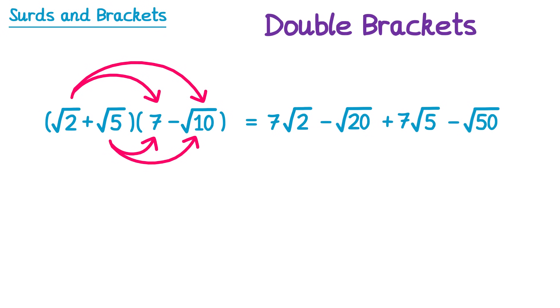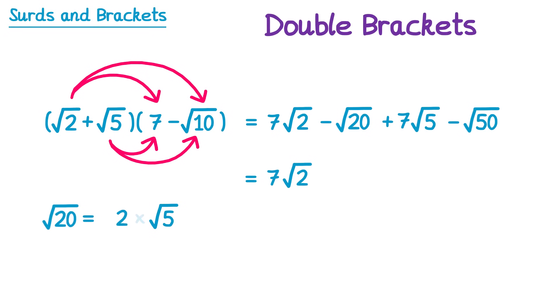At this point it may look as though there's no simplifying to do, because all of the surd terms have different numbers inside the square roots — we've got a 2, a 20, a 5 and a 50. However, we can simplify some of these surds further. The 7 root 2 can't be simplified, so we write that as 7 root 2. But square root 20 can be simplified: square root 20 is equal to square root 4 times square root 5, and square root 4 is just 2, so this is the same as 2 root 5. So let's replace the square root 20 with 2 root 5.